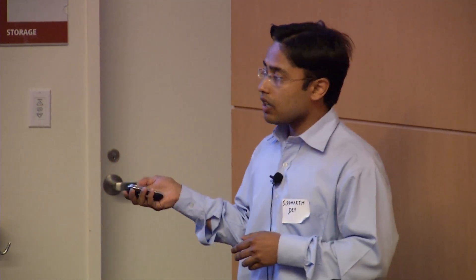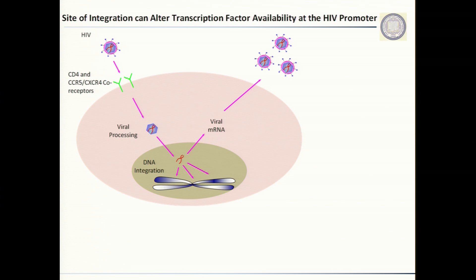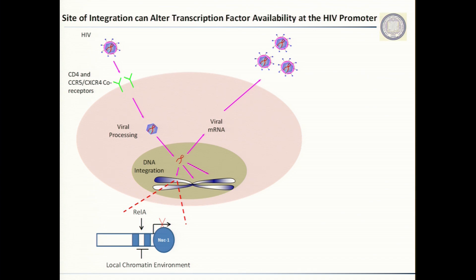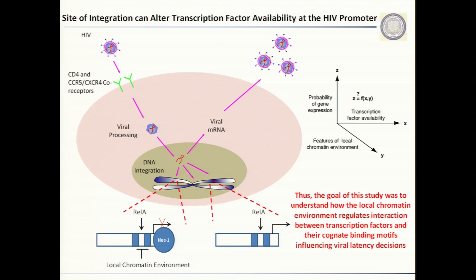We made use of HIV as a great system to study this. HIV integrates semi-randomly within the host genome, so you can think of different situations. In one case, HIV might integrate into a very closed or heterochromatic region, meaning that an important transcription factor called REL-A fails to bind to the two sites present in the HIV promoter. The nucleosome at the transcription start site then continues to sit there and prevents gene expression. On the other hand, HIV could integrate into a euchromatic region where REL-A binds, recruits the host transcriptional machinery, and activates gene expression. Essentially, we wanted to understand how transcription factor availability and features of the local chromatin environment together predict probability of gene expression and how those influence viral latency decisions.